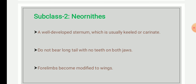The main characters of subclass Neornithes: they have a well-developed sternum. If the sternum is well developed, it will have a large keel, and this keel provides a surface area for the attachment of the flight muscles, which are very important for flight locomotion.